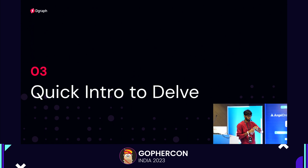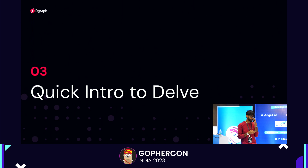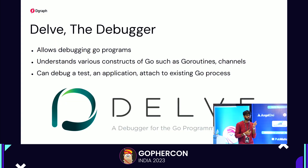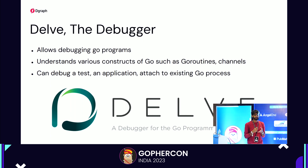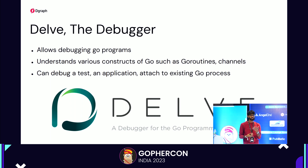Now we'll look into Delve. Delve is a debugger that allows debugging Go programs. It understands all Go language constructs — for example, goroutines, channels — so it can debug them really well. You can debug a test, an application, or even attach to an existing Go process. We'll see how we can debug distributed systems using Delve soon.